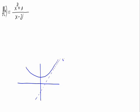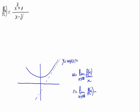This straight line has an equation y equals m times x plus n, where m is equal to the limit of f of x divided by x when x approaches infinite, and n is equal to the limit of f of x minus m times x when x approaches infinite. The result of these limits have to be real numbers, so we have oblique asymptotes.